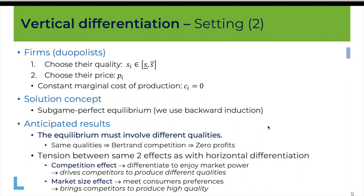Before going through the analysis, what results can we anticipate? We already know that firms will choose different qualities at equilibrium. The reason is simple: if they choose the exact same quality we are back in the Bertrand model where prices go down to marginal cost and firms make zero profits. Any firm has an incentive to change quality in the first stage and differentiate itself from the competitor to relax price competition and make positive profits. The question remains: how much differentiation — similar qualities or as different as possible?